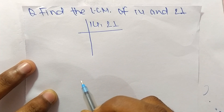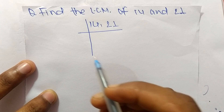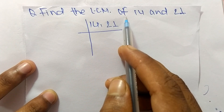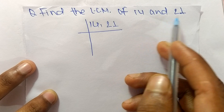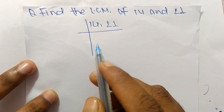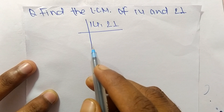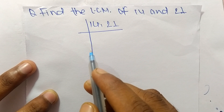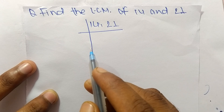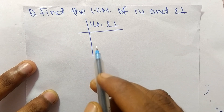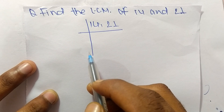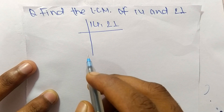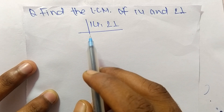Today in this video we shall learn to find the LCM of 14 and 21. To find the LCM, first we have to choose the lowest number that can exactly divide both 14 and 21.